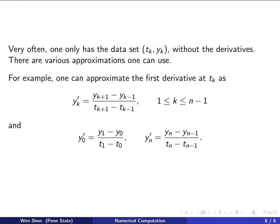For the boundary points y_0 and y_n, one cannot use the central finite difference because information is only available on one side. So we use a one-sided difference: y'_0 is the slope of the secant line from t_0 to t_1, and y'_n is the slope from t_{n-1} to t_n. Once approximations for all derivatives are obtained, we put them back into the formula and form the cubic Hermit spline functions. That's all for this video — thank you for watching.